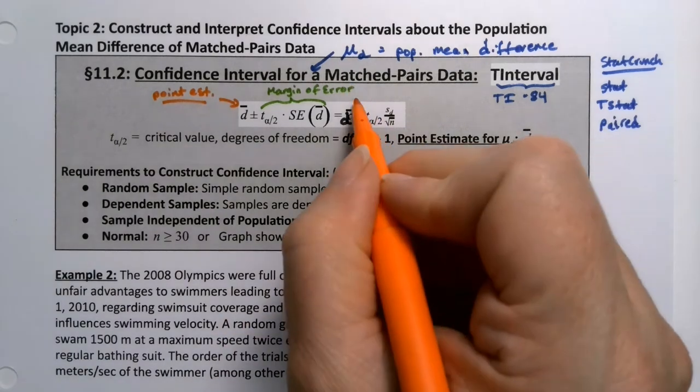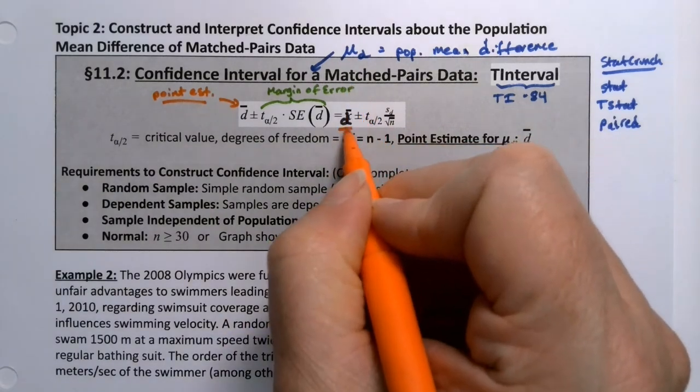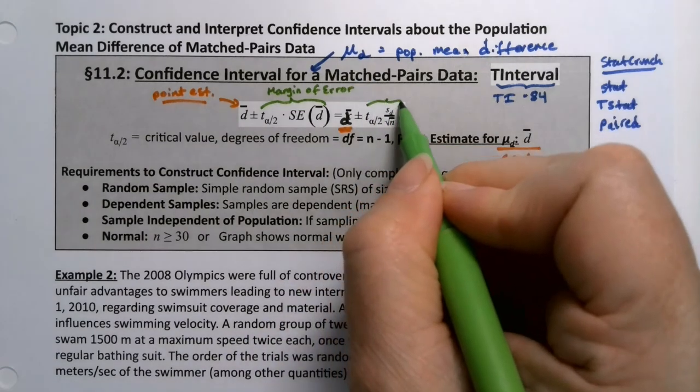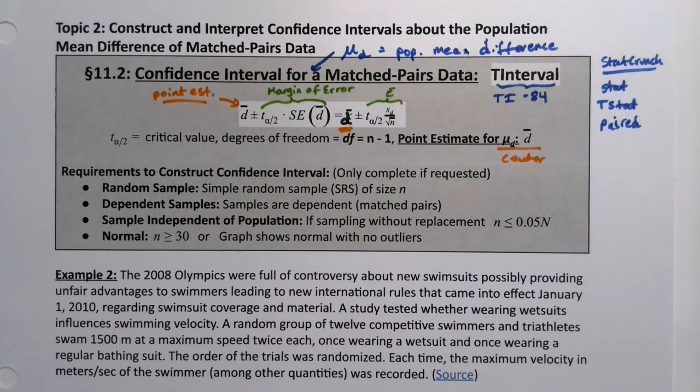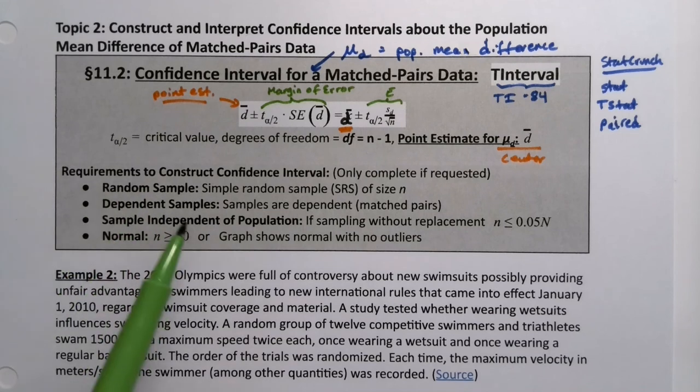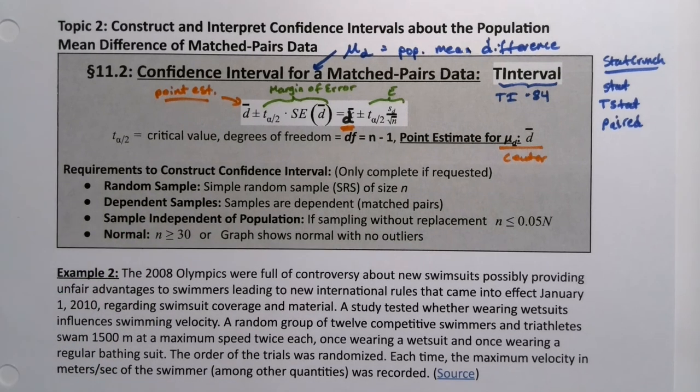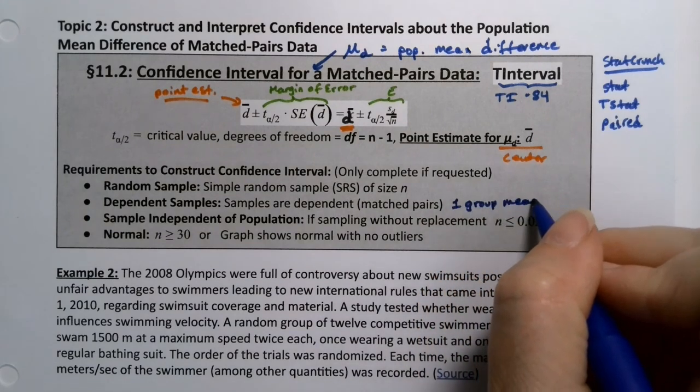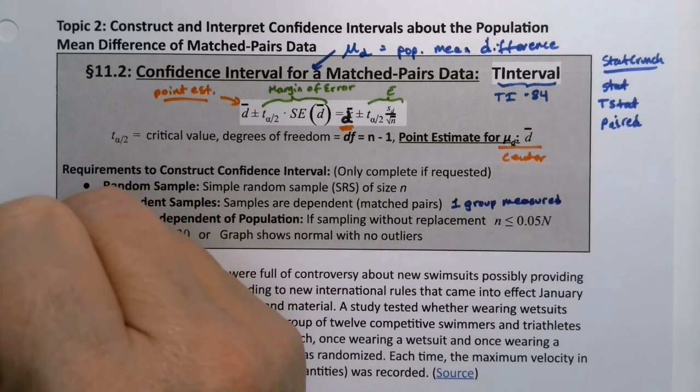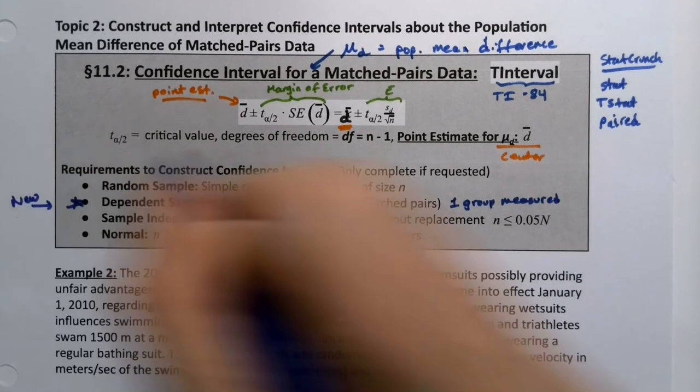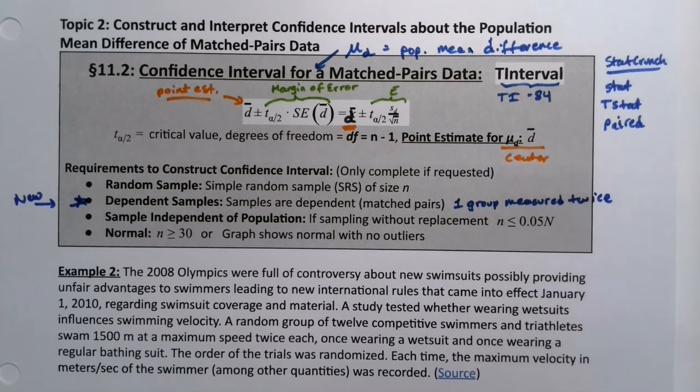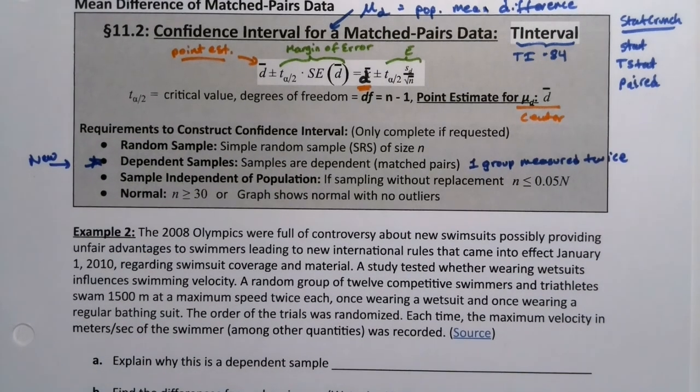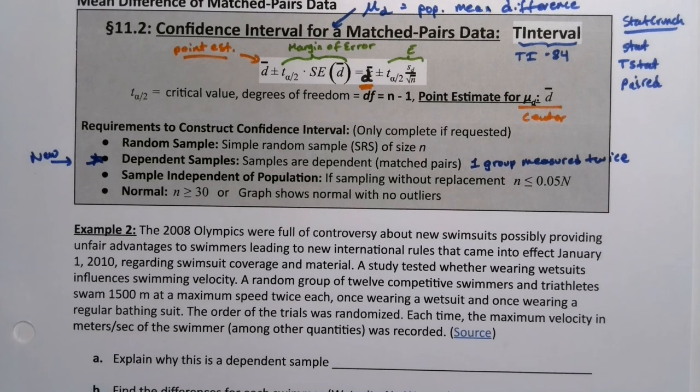And then the margin of error is the whole back half of this. It's the same formula and idea that we used in section 9-1. So you take your point estimate, plus or minus your margin of error, and you've built your confidence interval. Now the conditions are still the same as they were for a hypothesis test. We would have to have a random sample, have it be a dependent sample. Of course, that's the two groups, or one group measured twice.